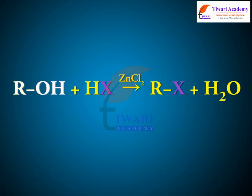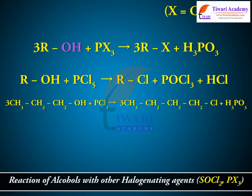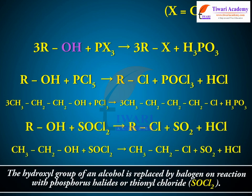The general reaction is: ROH plus HX in the presence of ZnCl2 gives RX plus H2O. Alcohols also react with other halogenating agents such as SOCl2 and PX3. The hydroxyl group of an alcohol is replaced by halogen on reaction with phosphorus halides or thionyl chloride, SOCl2.